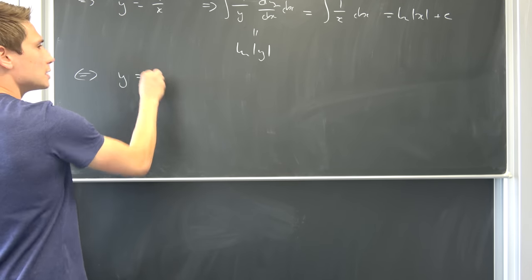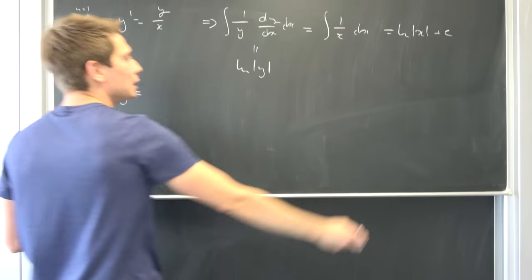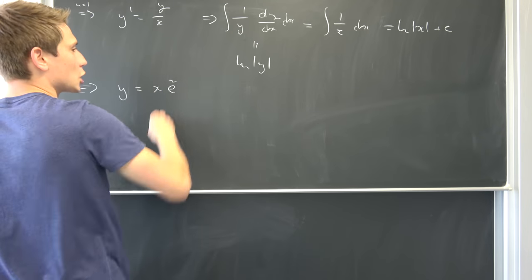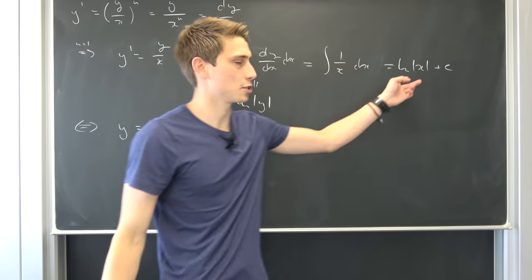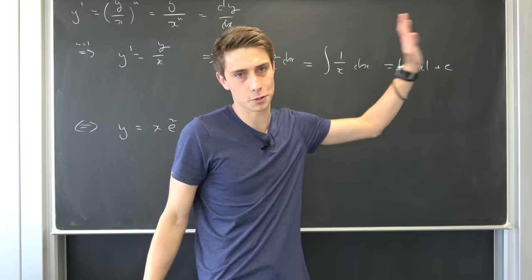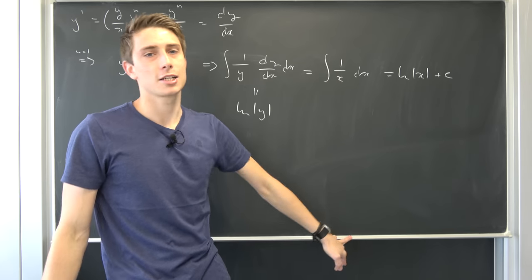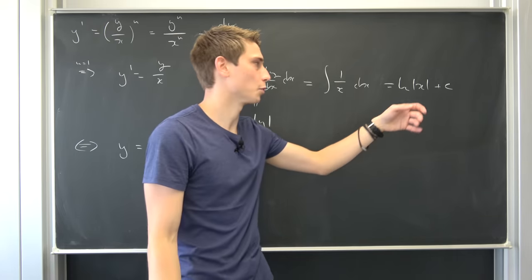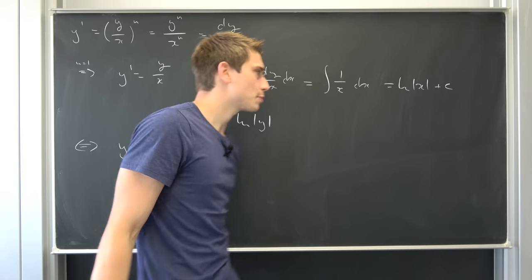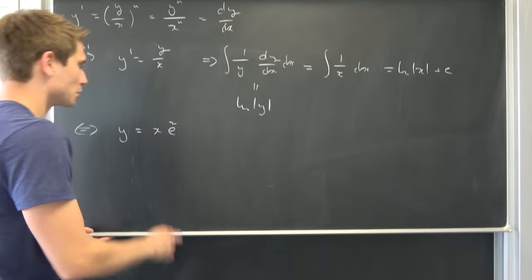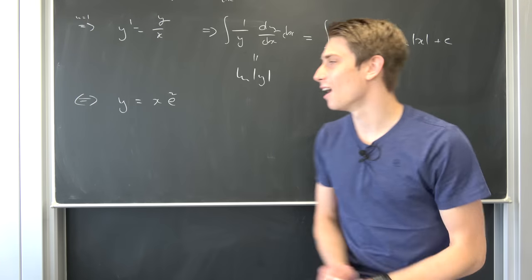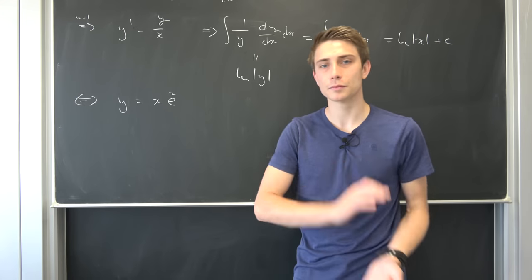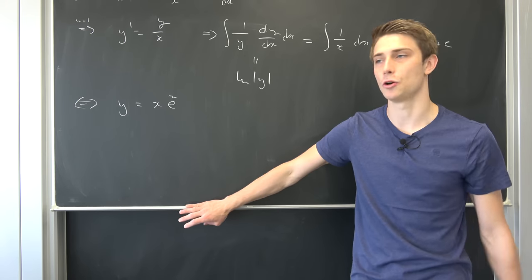Exponentiating both sides, y equals x times a constant (absorbing the exponential of c). We have gone through this process many times. So y equals Cx is the special case for n equals 1. I just wanted to discuss it, even though it may seem simple.